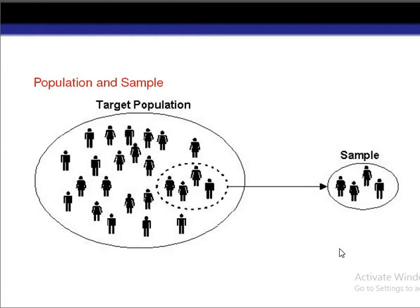Only in this way can we infer about the population based on the sample in a more valid way. That's why the selection of sample should be done very carefully, because we are going to generalize about the whole population based on the sample. We should select a representative sample — a sample which contains almost each and every characteristic of the population within it. When we select a representative sample, we can make inference about the population with more confidence.